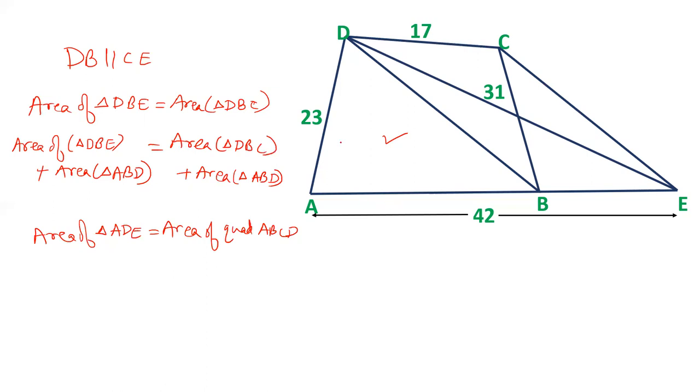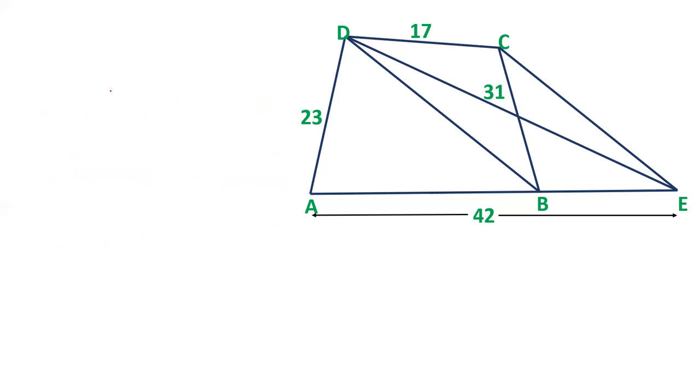In triangle ADE, three sides are given: 23, 42, 31. So we can easily calculate the area of this triangle by Heron's formula. So let's calculate area of triangle ADE by Heron's formula. In triangle ADE, one side is 23, second side is 31, third side is 42.